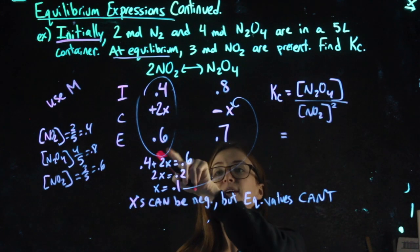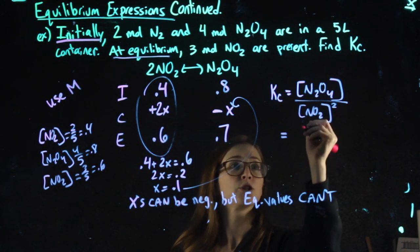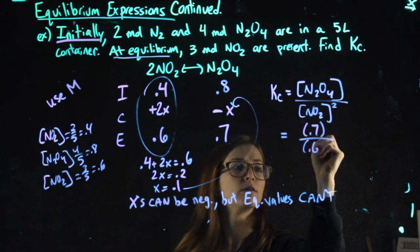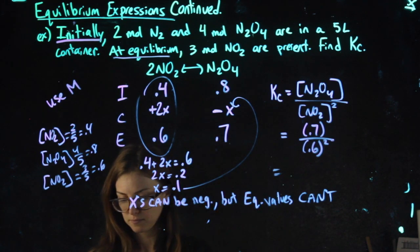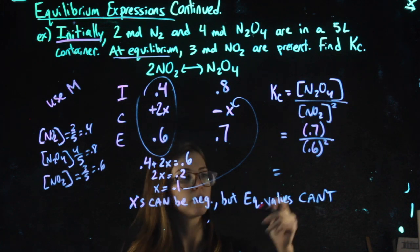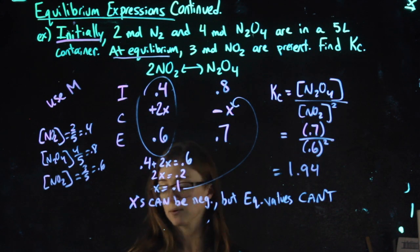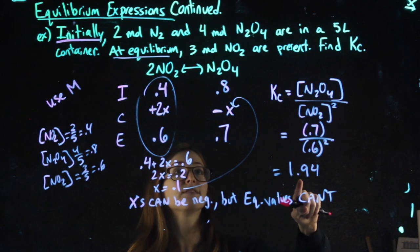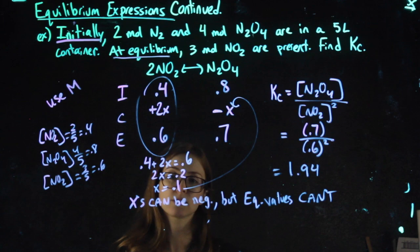Then I want to plug equilibrium values in, making sure none of my equilibrium values are negative. So N2O4 over NO2. And my equilibrium expression says to square that NO2 value. 0.7 divided by 0.6 squared, 1.94. Again, there are no units on my equilibrium expressions. That's it. So I might ask you for the KC value. I might ask you for all equilibrium values, in which case both of those would be my answer.